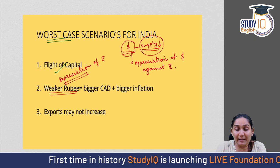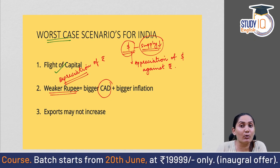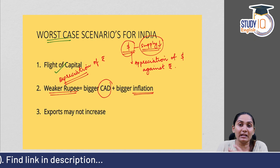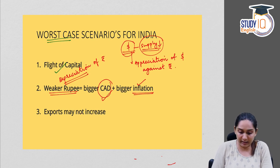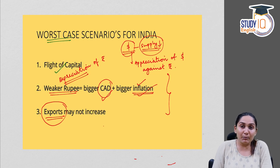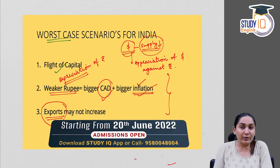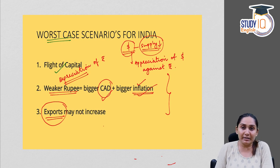When the rupee depreciates, it can lead to a higher current account deficit, because we have to pay more in terms of rupees. The current account deficit can widen, and paying more in rupees also means prices have increased, which can lead to inflation. Exports may also not increase significantly. These are the worst case scenarios for India. In India, we have contractionary monetary policy similar to fed tapering, and expansionary monetary policy similar to quantitative easing.